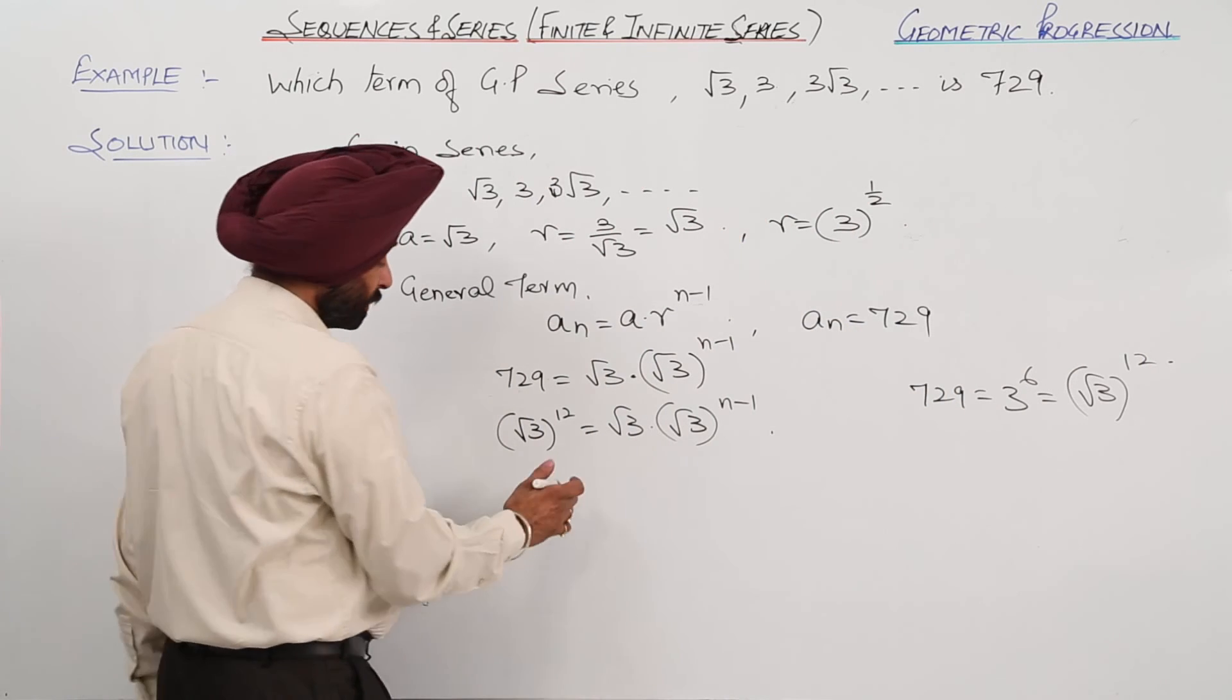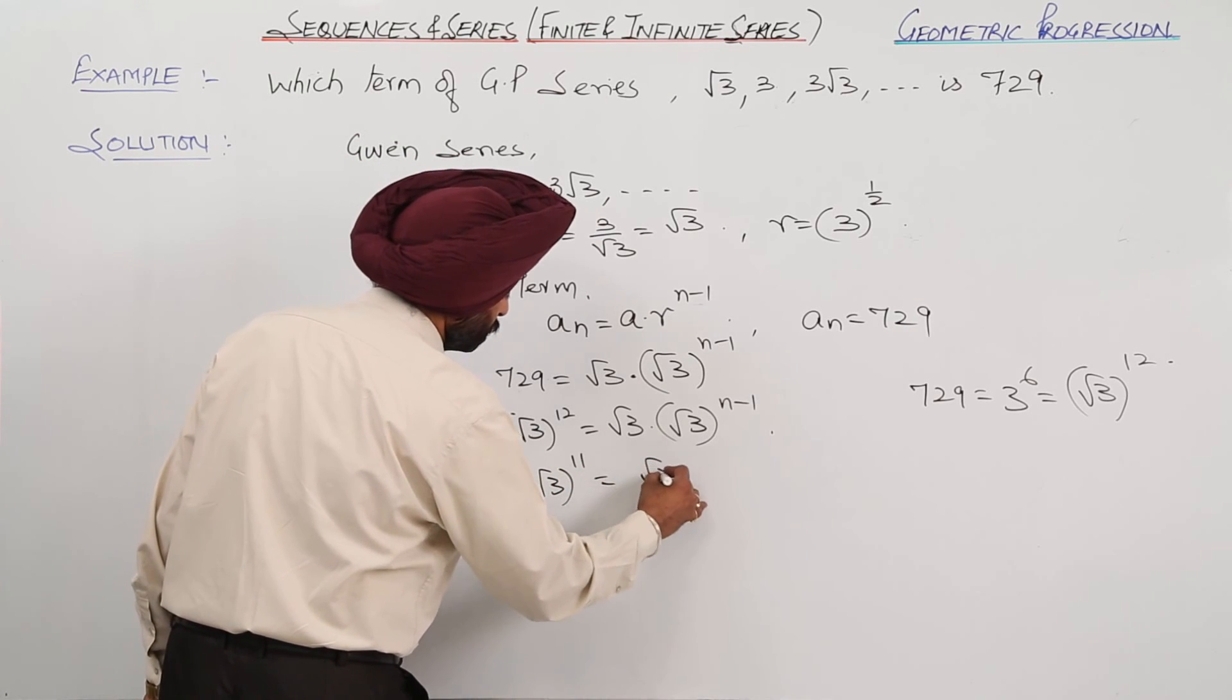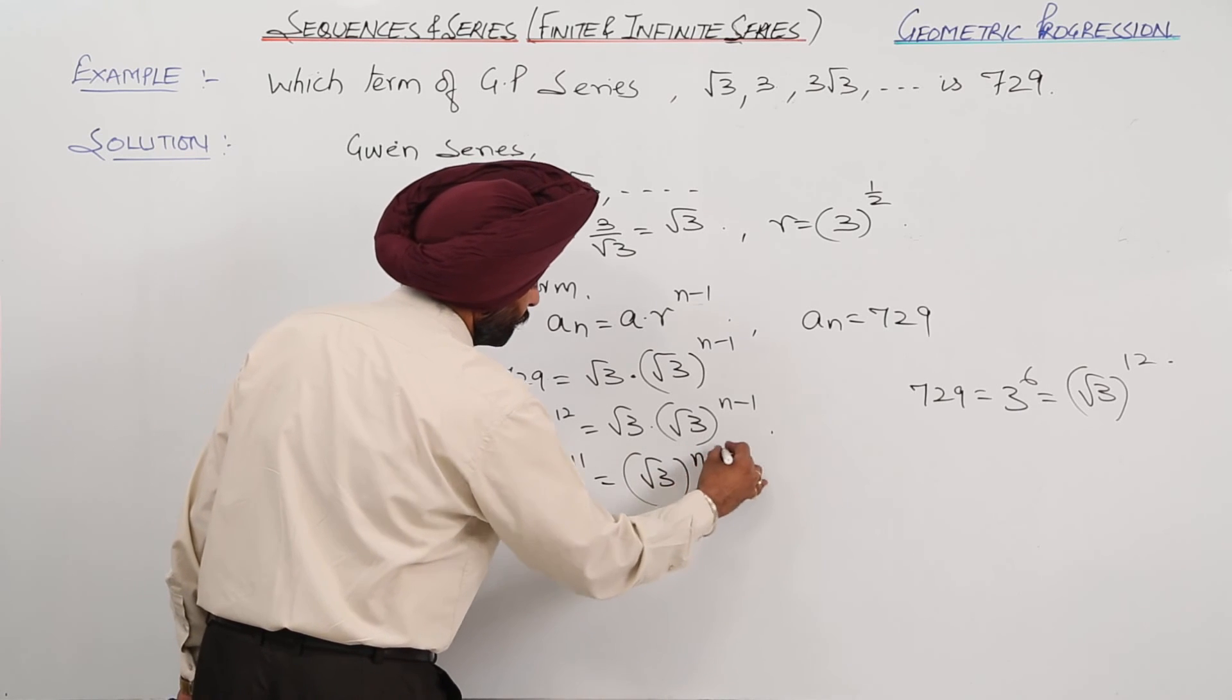Canceling one term, what we are left with? Root 3 raised to power 11 equals root 3 raised to power n minus 1.